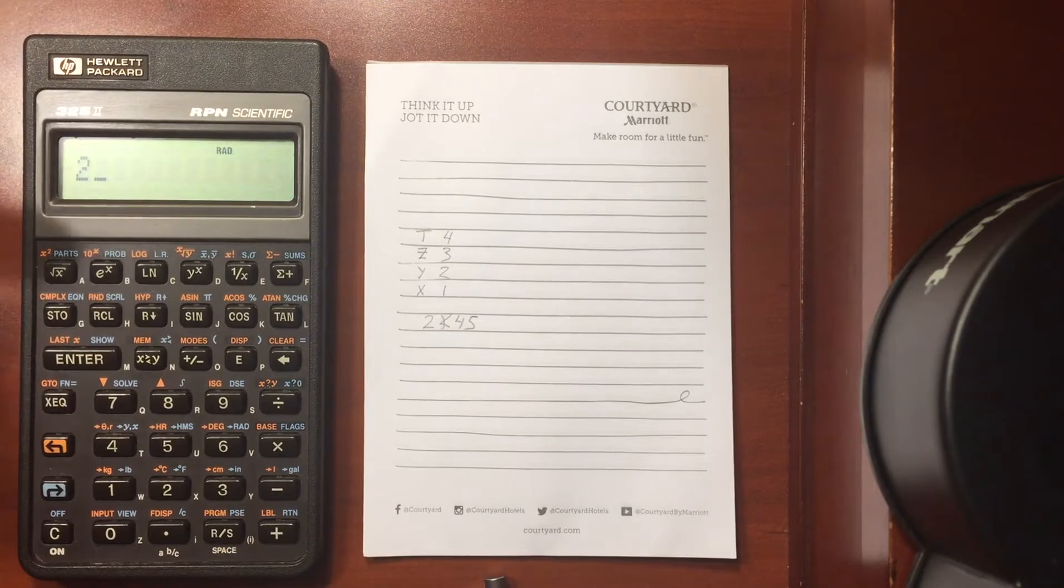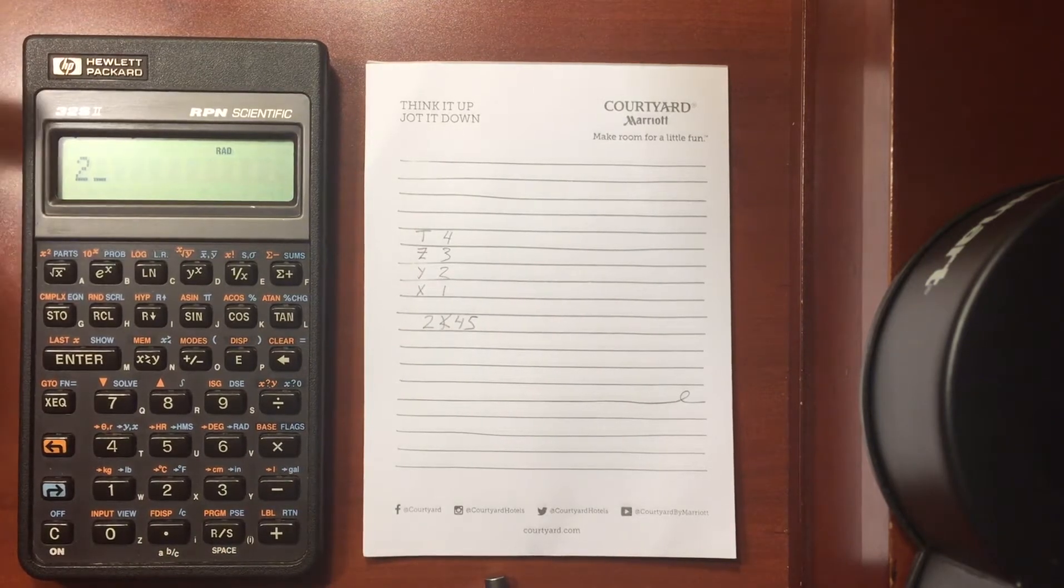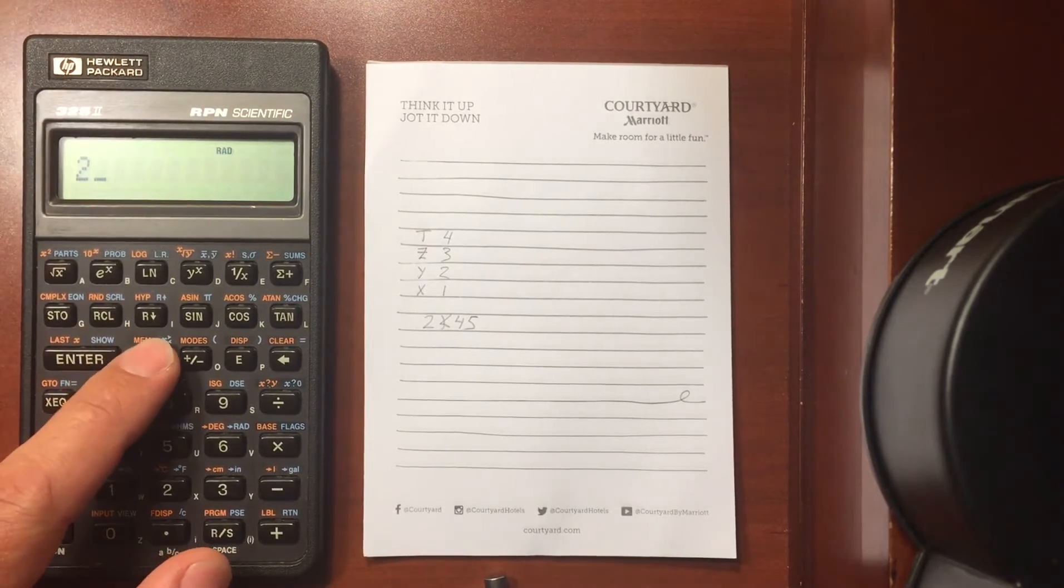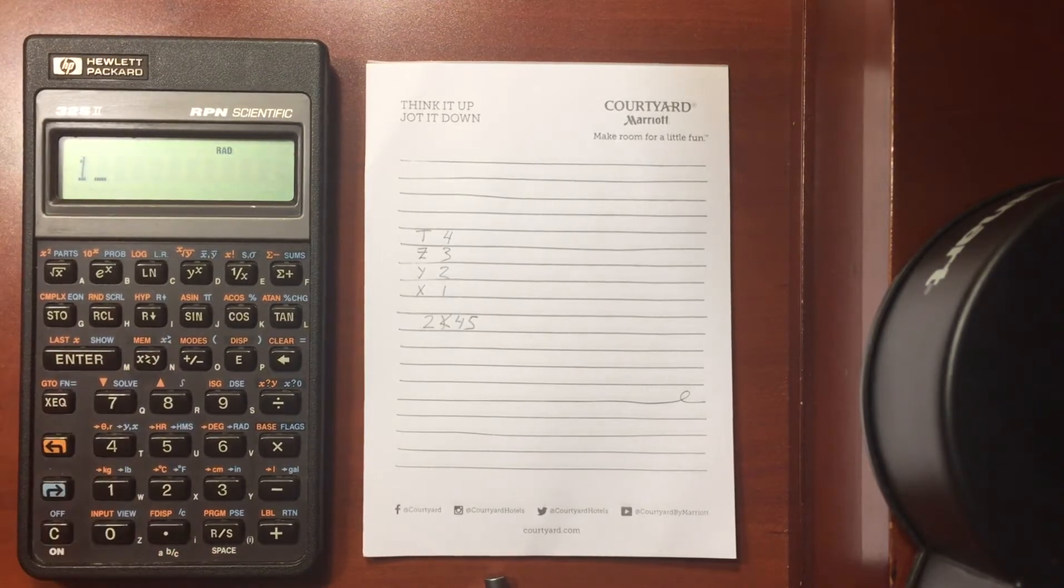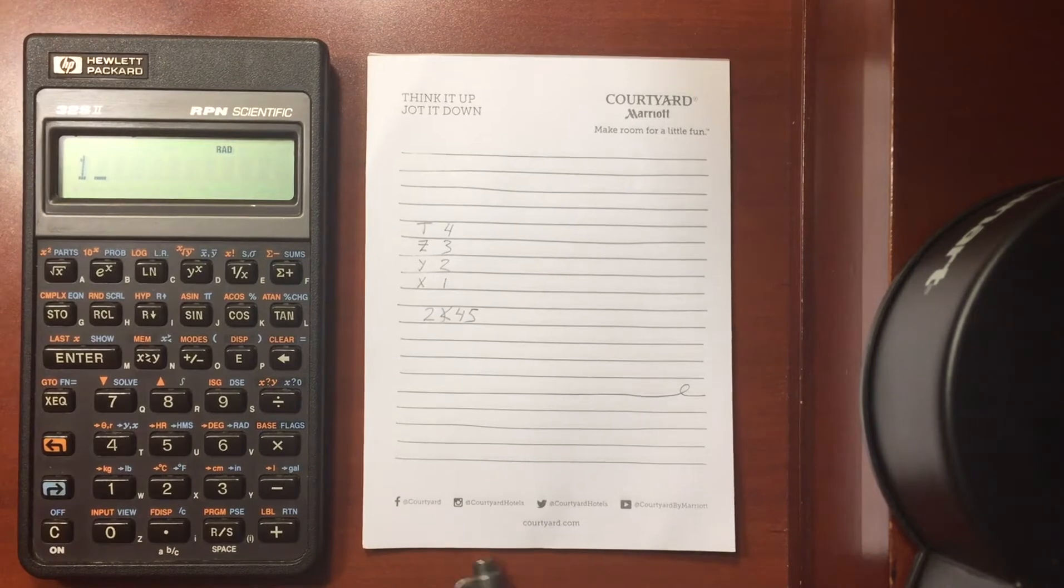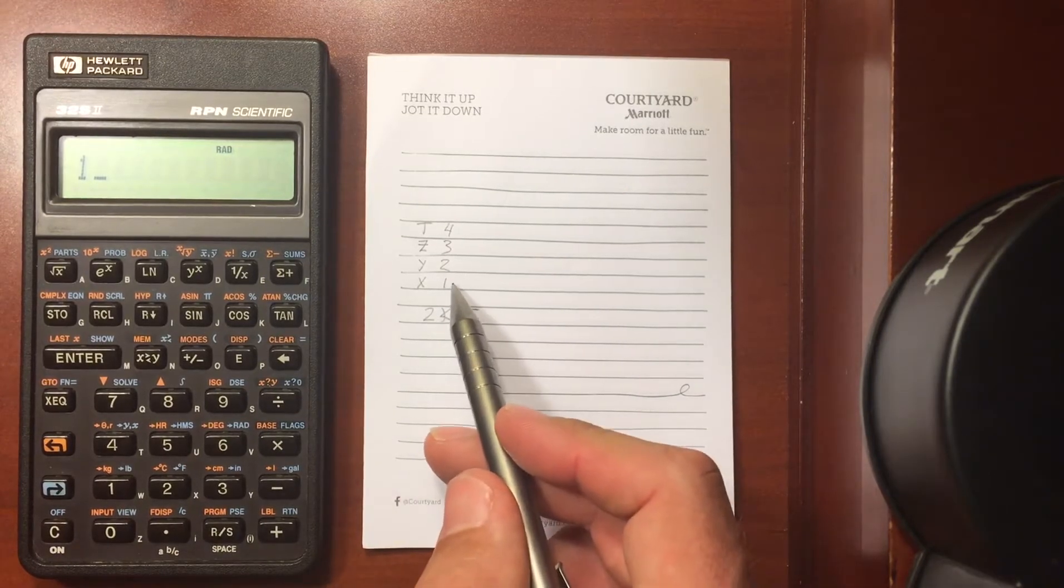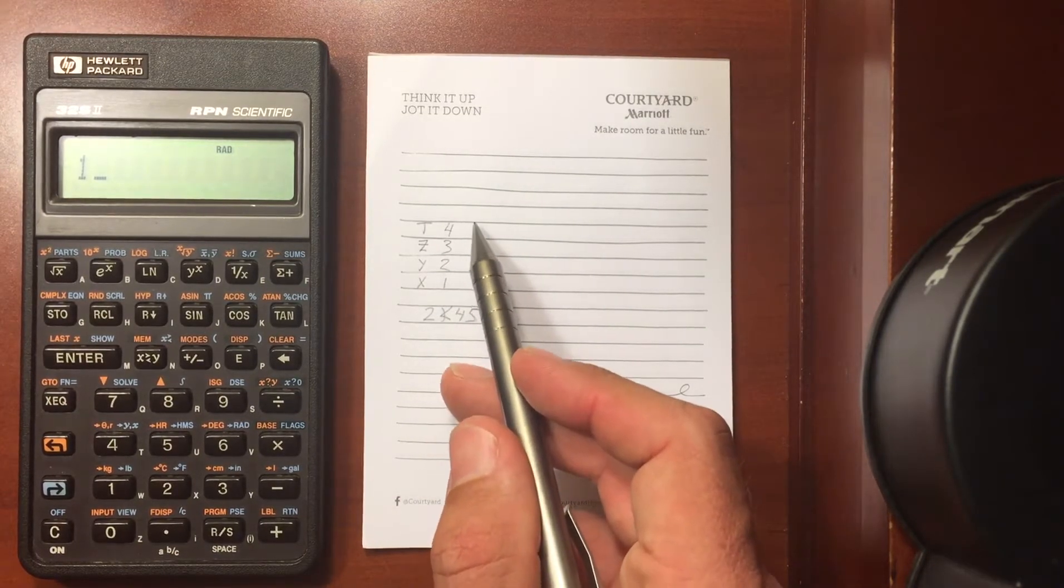I've now got a 2 in the X register, 3 in the Y, and 4 in the Z. I can swap the 2 and the 3 back and forth. Enter in a 1, and now I've got what resembles this configuration right here. So I have a 1, a 2, a 3, and a 4.